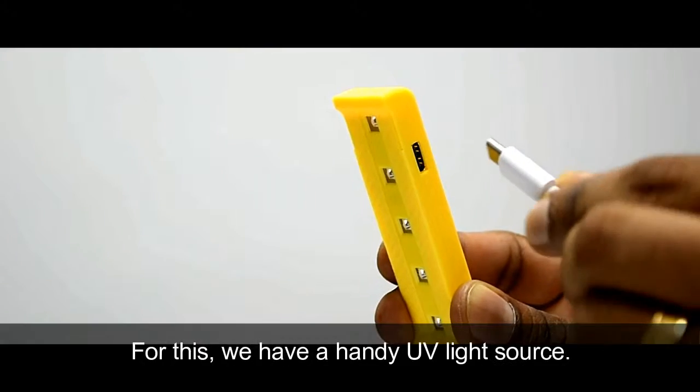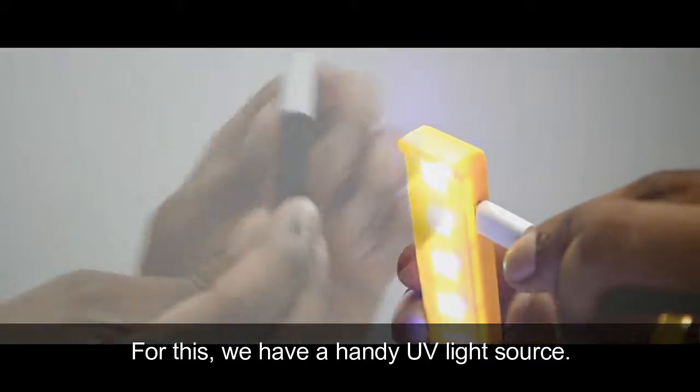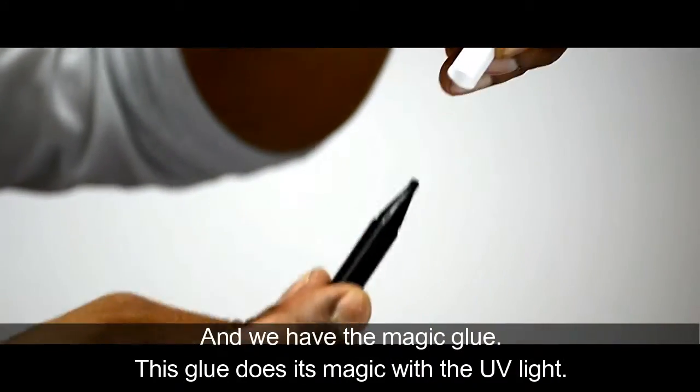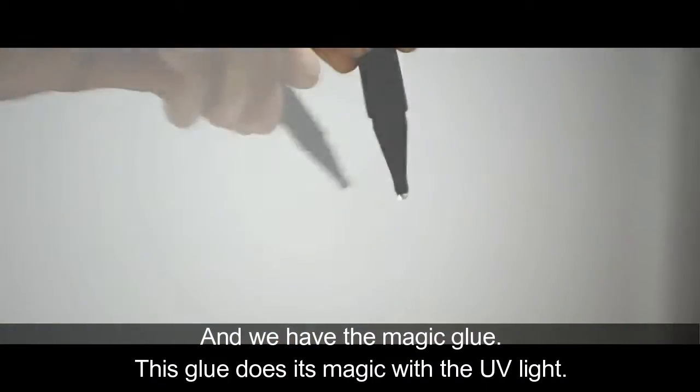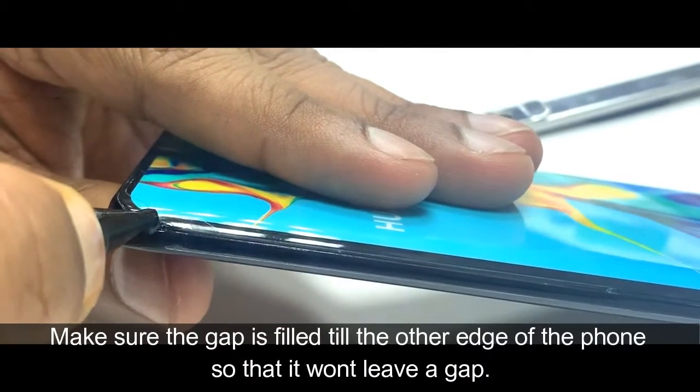For this we have a handy UV light source and the magic glue. This glue does its magic with the UV light. Make sure the gap is filled till the other edge of the phone so that it won't leave a gap.